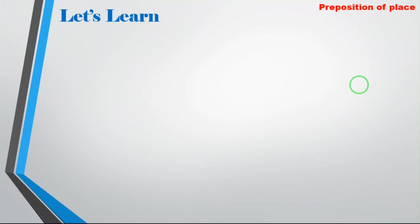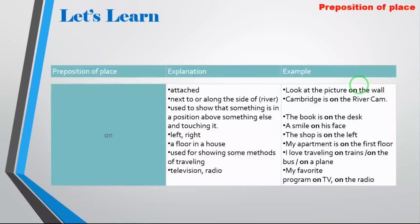Now let's move to the last one: 'on.' We use 'on' when something is attached to something else. For example: look at the picture on the wall. Let me show you — this is the wall, and this is the picture attached on the wall. Another use: next to or along the side of a river. For example, Cambridge is on the River Cam — not on top of the river, but along the side of it.